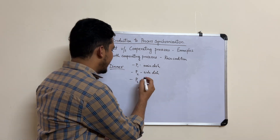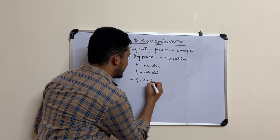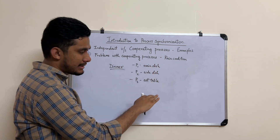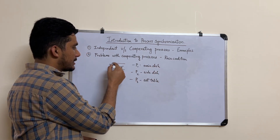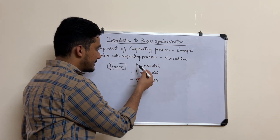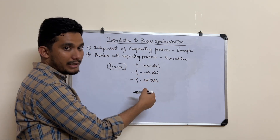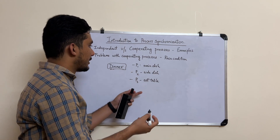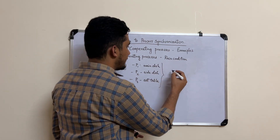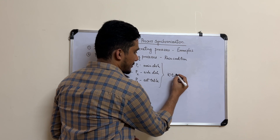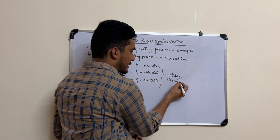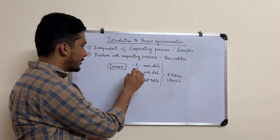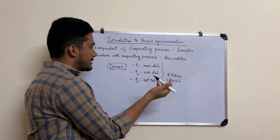P3, the child, is setting up the table. While each process is doing an individual task, the main aim is to get the dinner set. These processes also share common resources like the kitchen or utensils, so they need to coordinate among themselves in order to get this task done.